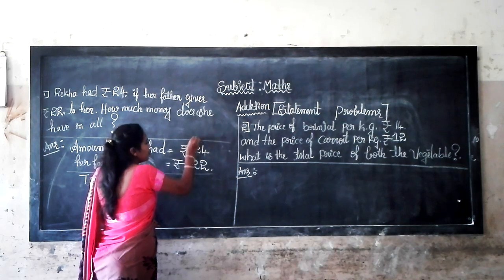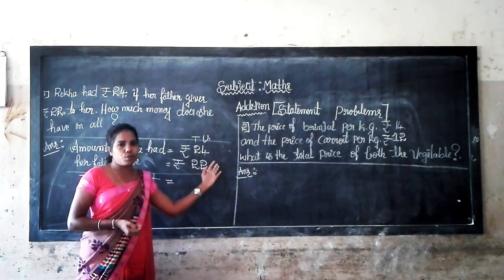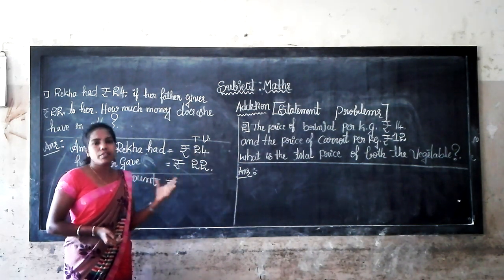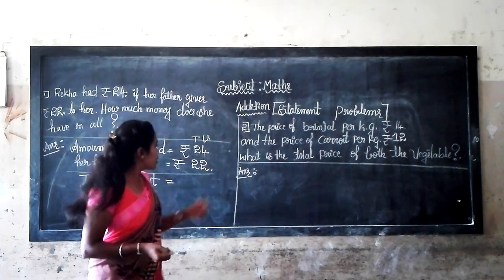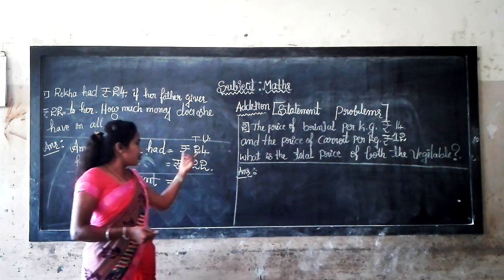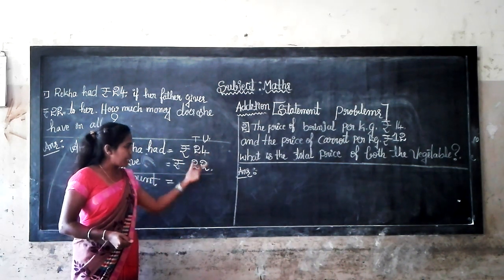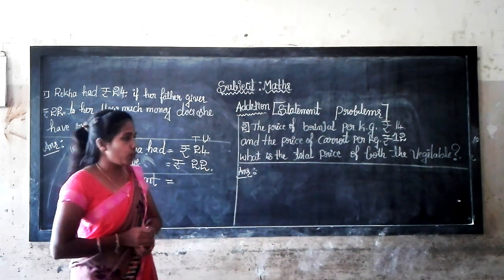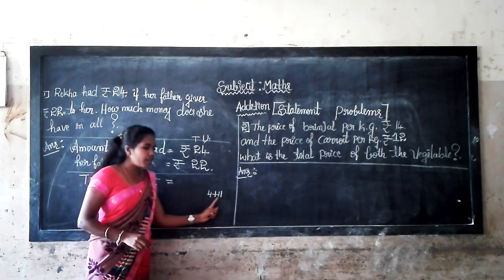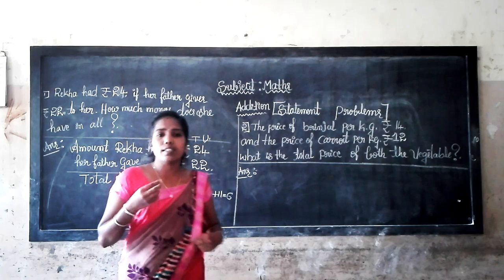In 24, there are 2 tens and 4 units. In 22, there are 2 tens and 2 units. Firstly, we add the unit place numbers. The unit place numbers are 4 and 2. What is the sum of 4 and 2? After 4 comes 5, after 5 comes 6. So 4 plus 2 equals 6. Since 6 is a single digit number, there is no carry over.